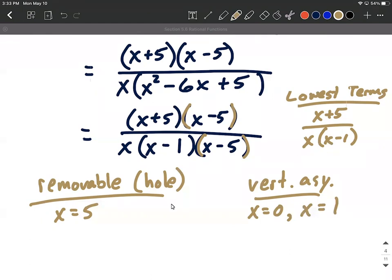Last thing we're going to do is locate exactly where is this removable discontinuity or where is this hole. Now we know an x value of 5, but we don't know a y value to go with it. So let's finish this up by plugging into the lowest terms version of this with our 5.